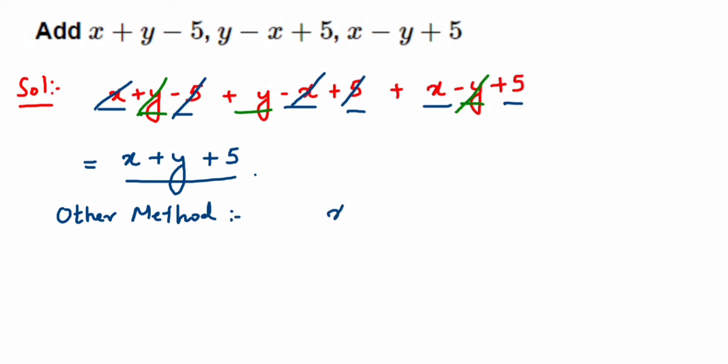When doing this, place the like terms one below the other. In the second expression we have y, so I'll place it below the y, then minus x below the x, and then plus 5. Make sure you use the proper signs.